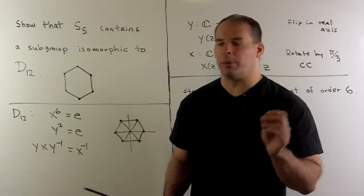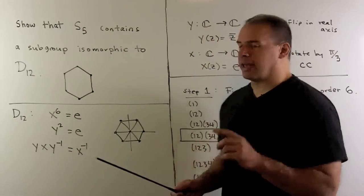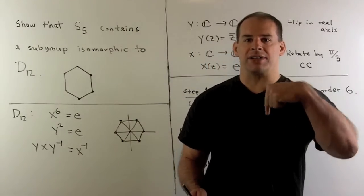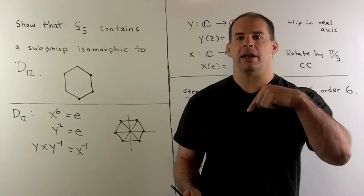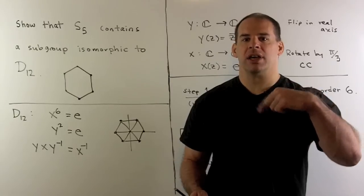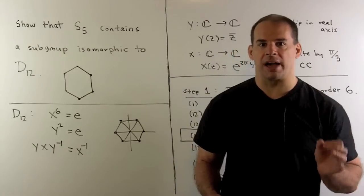The way to interpret the third relation, if I'm in the XY plane, what this says is if I flip through the X axis, rotate by 60 degrees, it's the same as if we rotate by minus 60 degrees and then flip in the X axis.